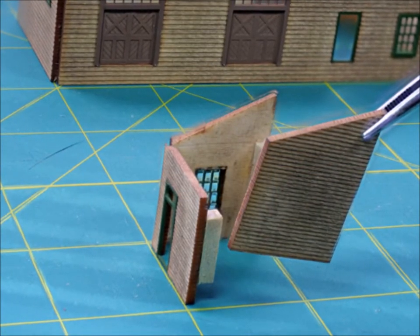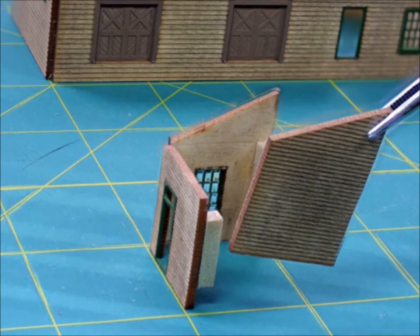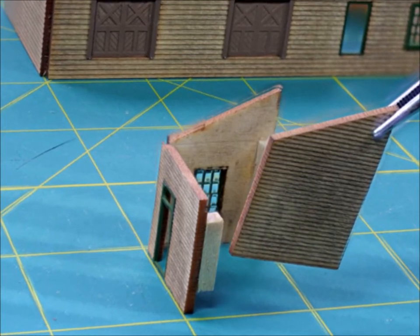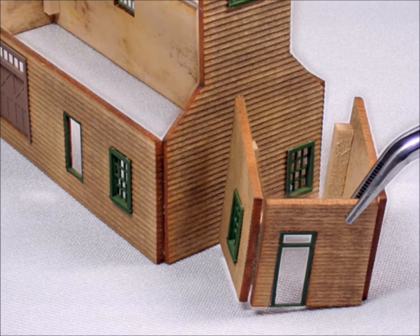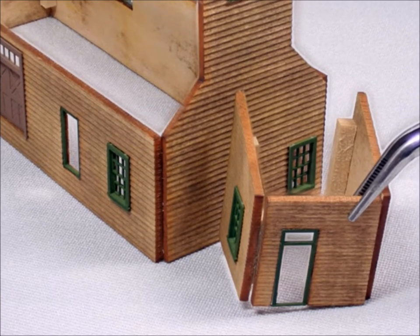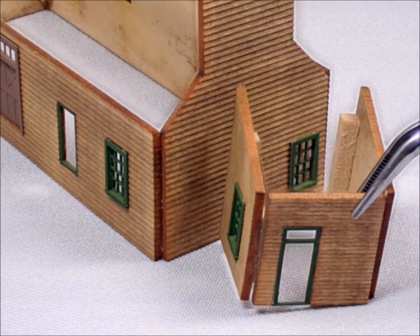Then you build the little side building. Once again gluing those backing corners in. And while you're looking here you'll see that there's a hole between the different parts of the walls. That will be filled in with trim as you move along.